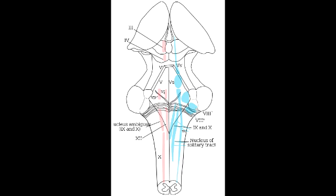What cranial nerve provides input to the dorsal motor nucleus? The cranial nerve that provides input to the dorsal motor nucleus is cranial nerve 10, the vagus nerve.